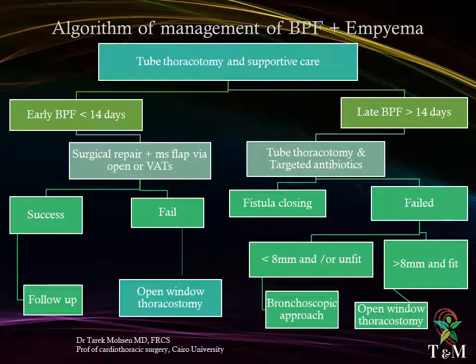The management algorithm for bronchopleural fistula with empyema begins with chest tube drainage and supportive measures. The next step is to determine whether the fistula is early or late. For early fistula — less than 14 days — the best approach is revision of the stump using muscle flaps via open or video-assisted thoracoscopy, with an expected success rate of 95%. In cases that fail, open window thoracostomy is performed.